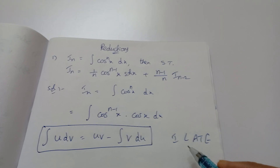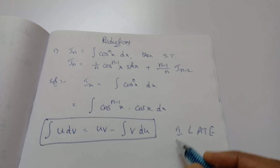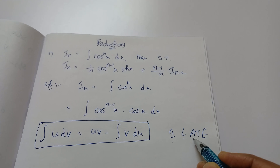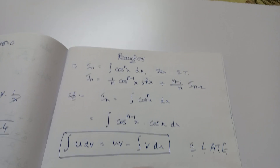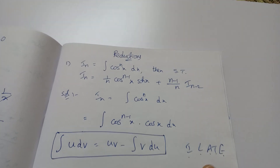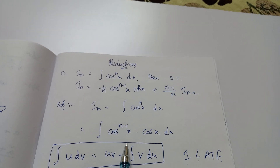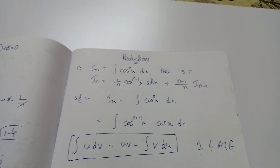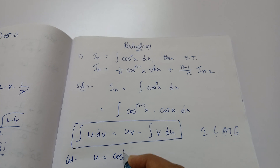We use the ILATE rule. ILATE stands for: Inverse, Logarithmic, Algebraic, Trigonometric, Exponential functions. Among the two functions here, whichever comes first in ILATE is taken as u, and the remaining is dv. Here we take the first function as u and the remaining as dv.